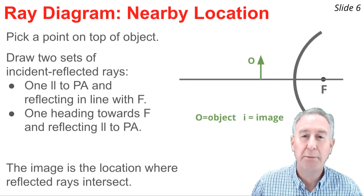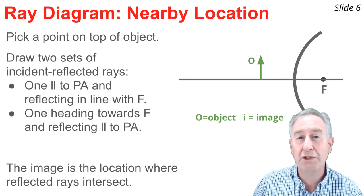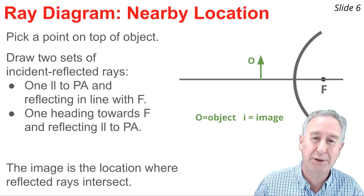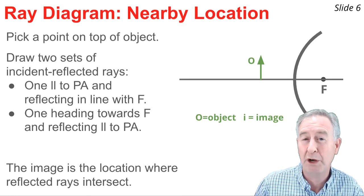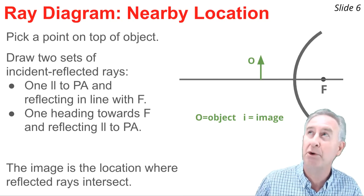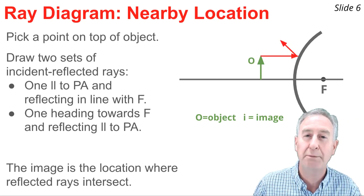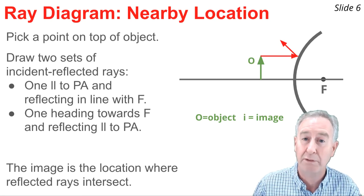I'm going to now repeat the process of drawing a ray diagram for an object location which is closer to the mirror, to see if object location affects the result when you draw a ray diagram. So I pick a point on top of the object and from that point I draw two sets of incident and reflected rays. Parallel to the principal axis reflects in line with the focal point.